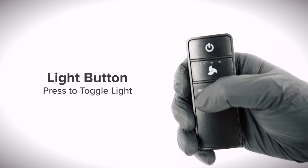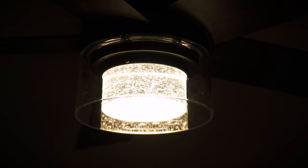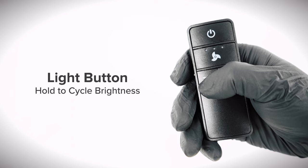Press the light button to turn the light on or off. Hold the button to cycle through the different brightness settings.